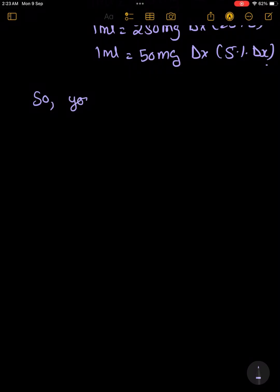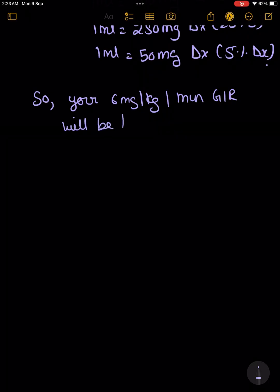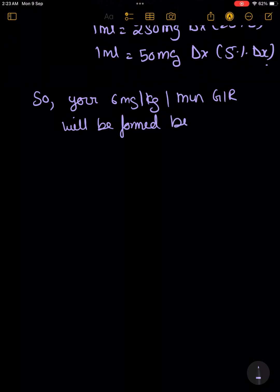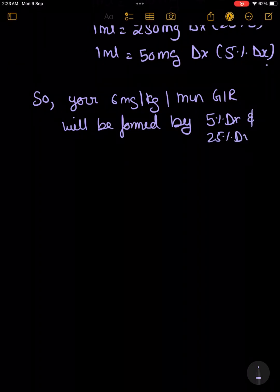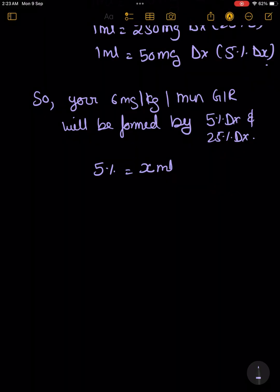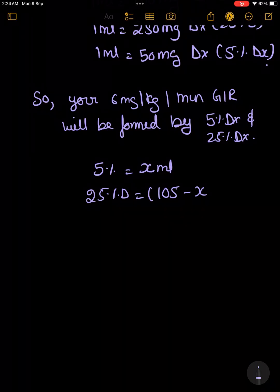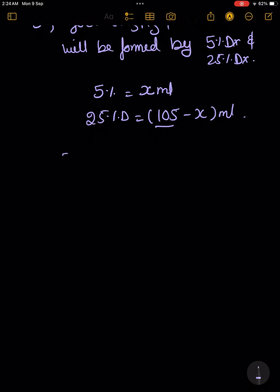Now let's use this concept to calculate our GIR. We want to give a GIR of 6 mg per kg per minute, and we are making it by mixing 5% and 25% dextrose. Let's say we give x ml of 5% dextrose and y ml of 25% dextrose. Since 105 ml is the total fluid to give the baby, y equals 105 minus x.